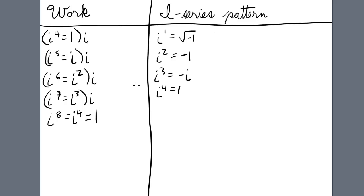So taking what we've learned in the work column, we can enter the next four powers of i. i to the fifth equals i, i to the sixth equals i squared, i to the seventh equals negative i, and i to the eighth equals i to the fourth.